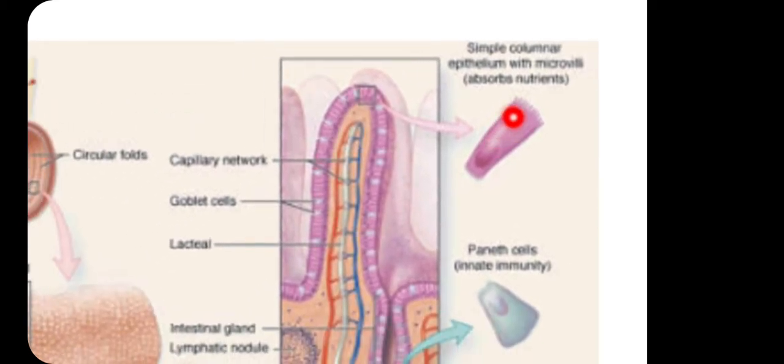The single columnar epithelial cells are found lining the surface of the small intestine.